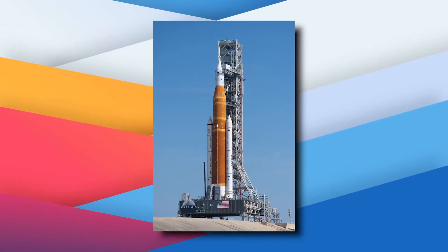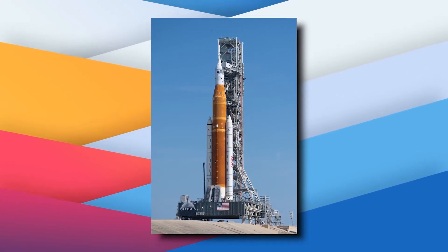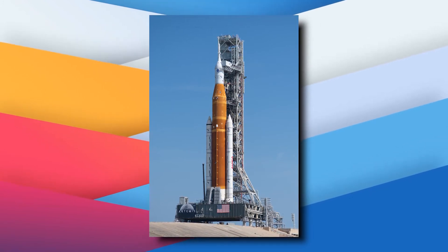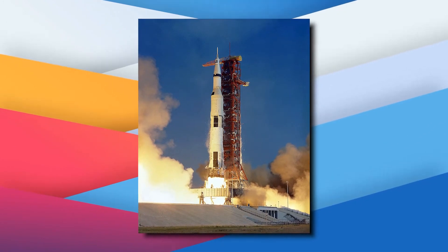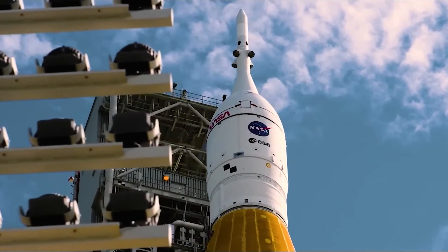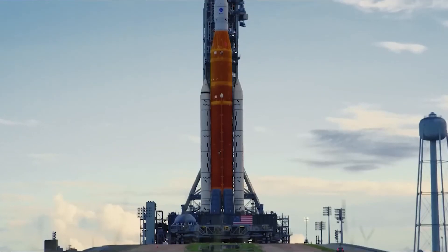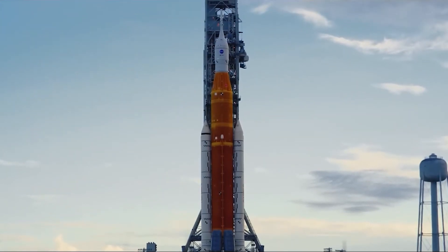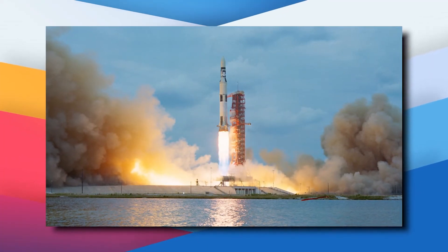The SLS Orion combination stands 98 meters tall and serves as the centerpiece of NASA's successor to the Apollo moon program of the 1960s and 1970s. The SLS, billed as the most powerful and complex rocket in the world, is the largest new vertical launch system NASA has built since the Saturn V, which flew for Apollo.